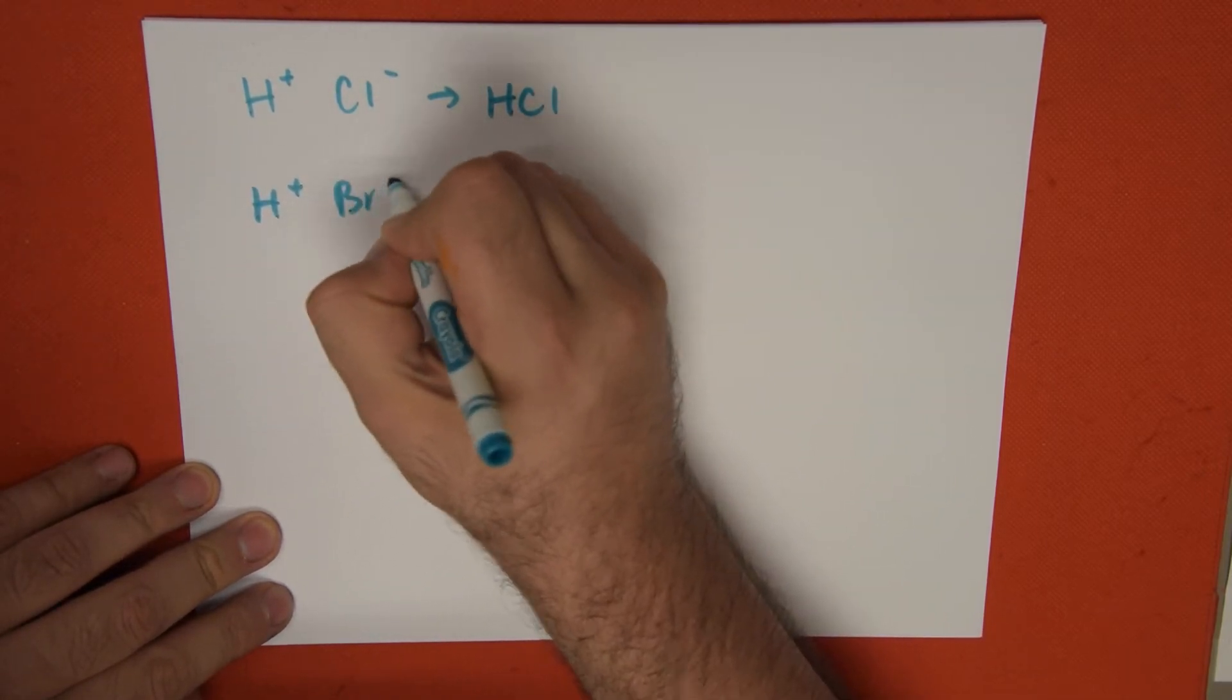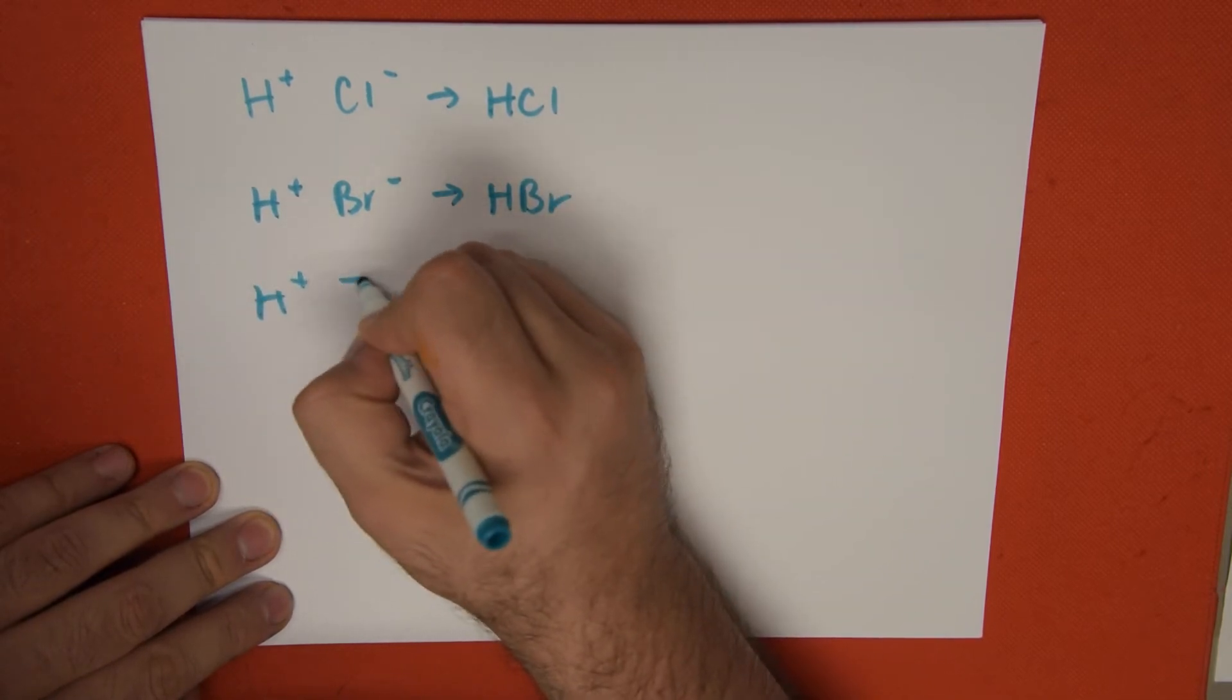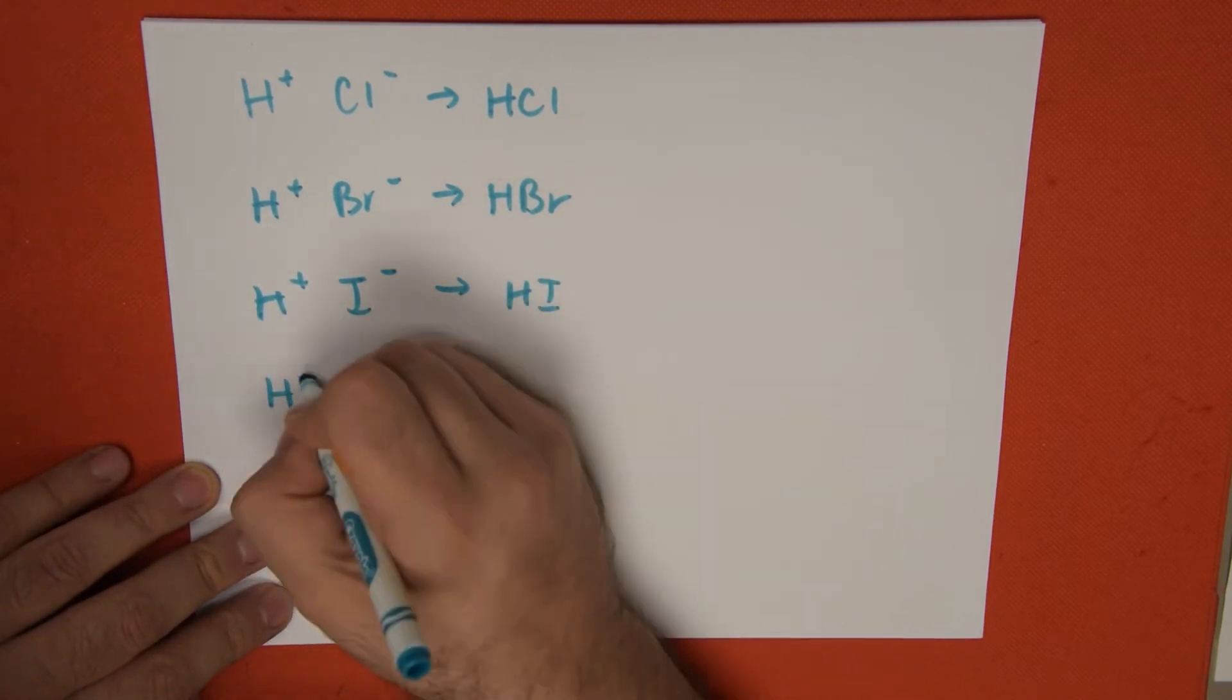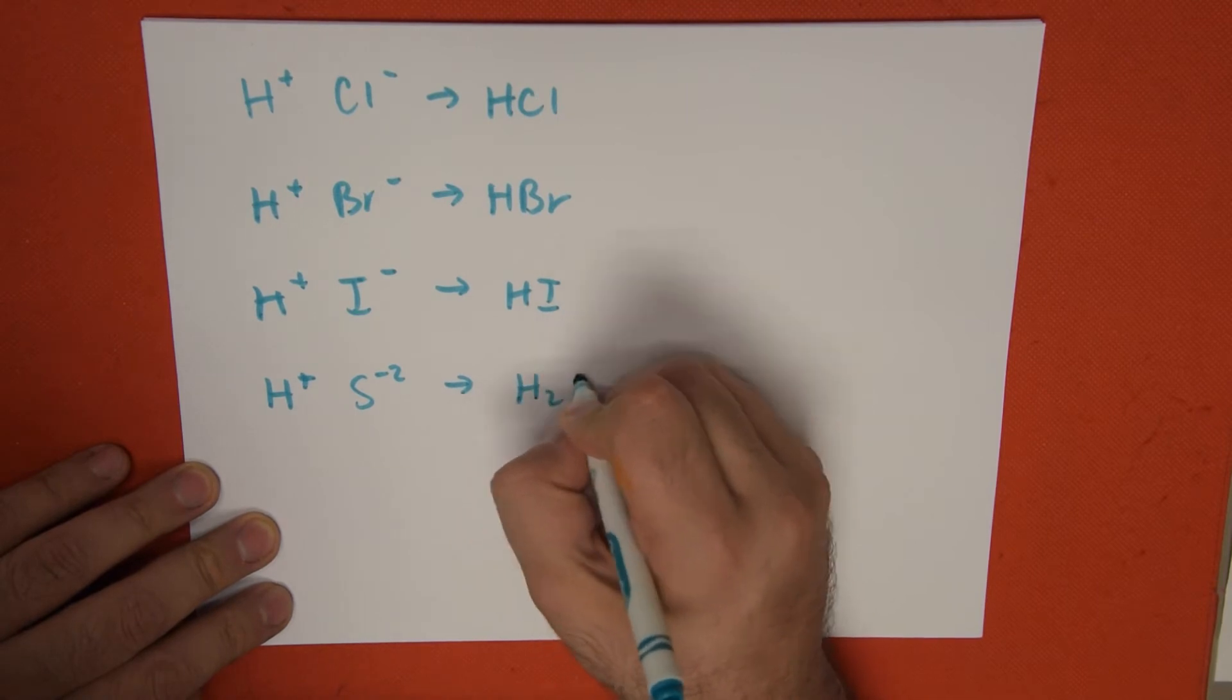H+ with bromine minus one gives us HBr. H+ with I- gives us HI. H+ with sulfur minus two gives us H2S.